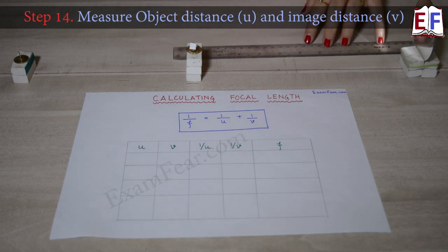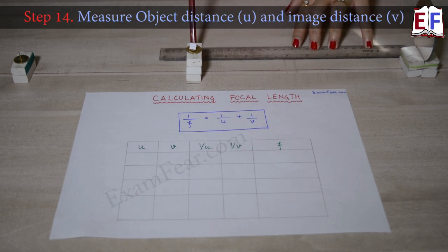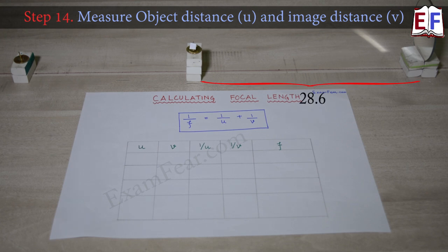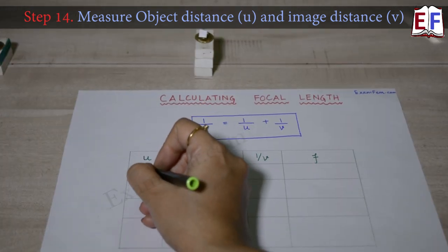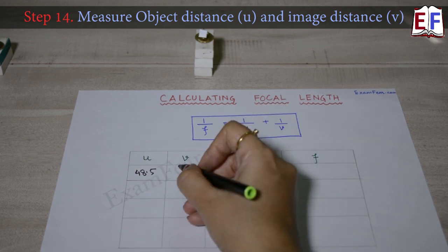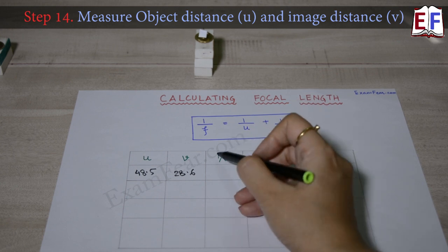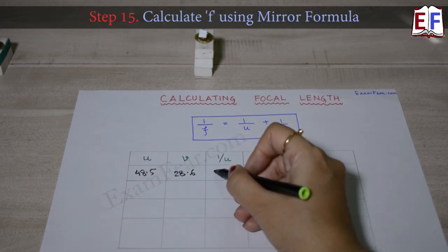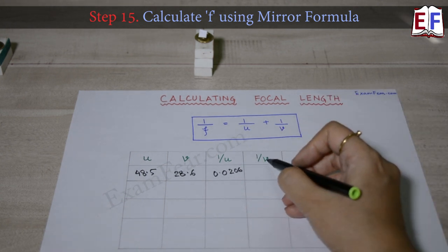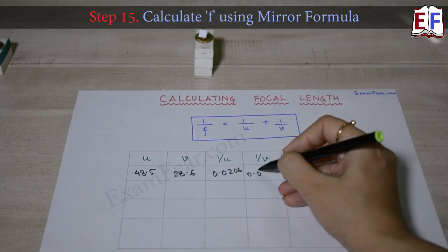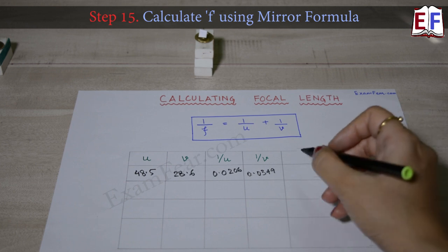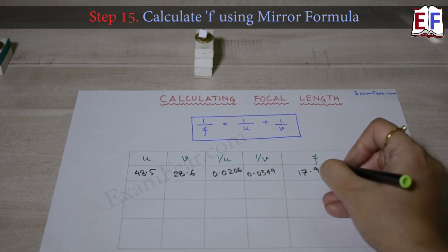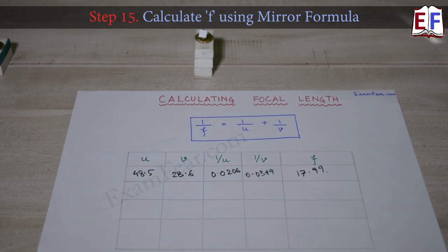The distance of the image pin from the pole gives the image distance v, which comes out to be 28.6 centimeters. The object distance u is the distance of the object pin from the pole, which comes out to be 48.5 centimeters. Using 1/f = 1/u + 1/v, with 1/u = 1/48.5 ≈ 0.0349, the focal length f comes out to be 17.99 centimeters.